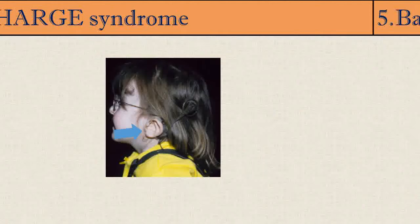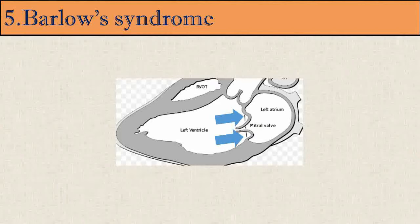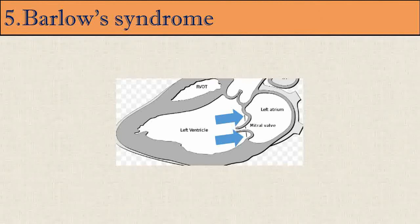The fifth disease is Barlow's Syndrome, named after South African professor John Barlow who described it in 1966. It is a type of heart valve disease affecting the mitral valve, where one or more flaps of the mitral valve are floppy and don't close properly. It was later given the more literal name of Mitral Valve Prolapse, also known as Click Murmur Syndrome because of the sounds heard with a stethoscope. It is one of the most common types of heart valve abnormality, though many patients have no symptoms.